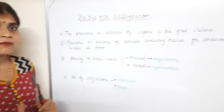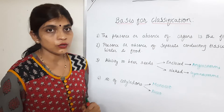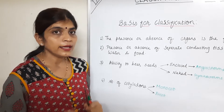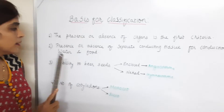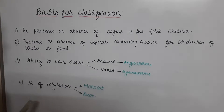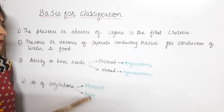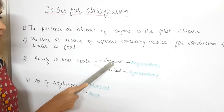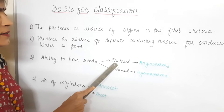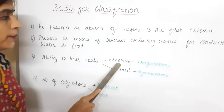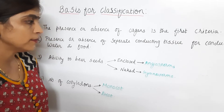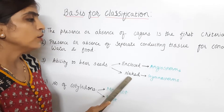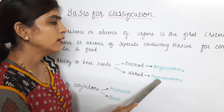Some plants have seeds and some do not. So depending on whether the plants bear seeds or not forms the third criteria. And if plants bear seeds, then whether the seeds are enclosed in fruits or not is also considered. If seeds are enclosed in fruits, such plants are called angiosperms. If the seeds are naked — that is, no fruit encloses the seed — then such plants are called gymnosperms.